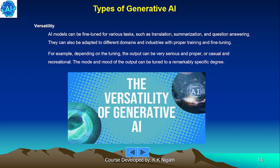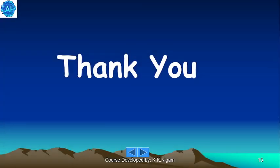Versatility. AI models can be fine-tuned for various tasks such as translation, summarization and question answering. They can also be adapted to different domains and industries with proper training and fine-tuning. For example, depending on the tuning, the output can be very serious and formal, or casual and recreational. The tone and mode of the output can be tuned to a remarkably specific degree. Thank you.